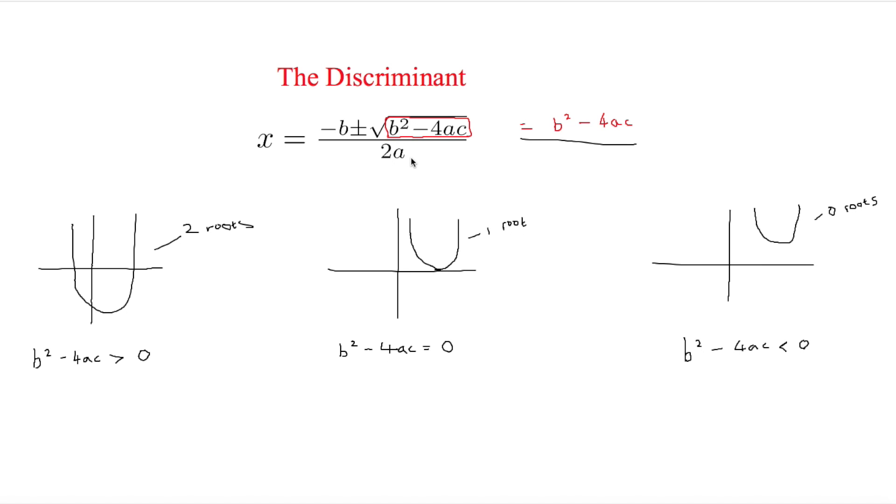The discriminant can help us determine how many roots there are in a quadratic equation. The roots, when you look at graphs, is the times it touches the x-axis. In a quadratic curve, the most there can be is two roots, there can be one root if it only touches once, or there can be zero roots. So how do you determine this using the discriminant?